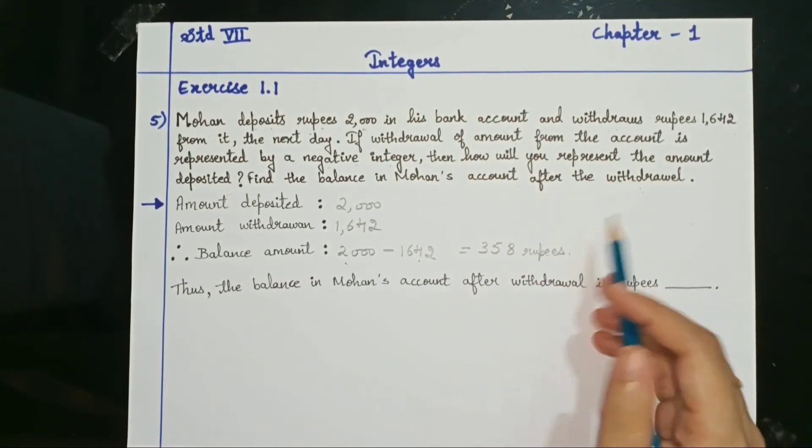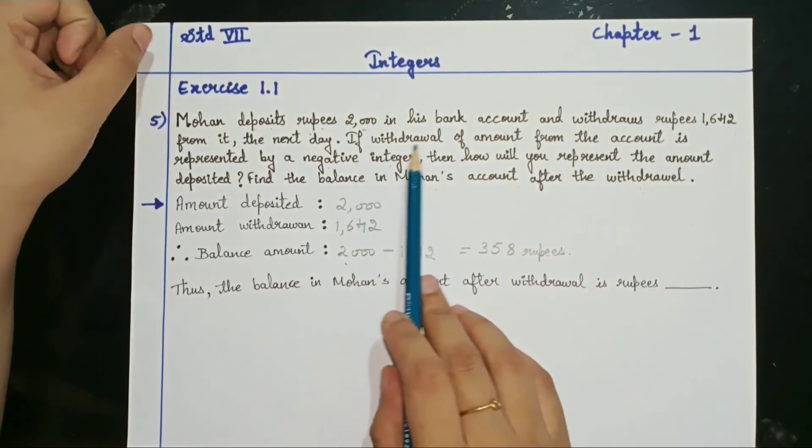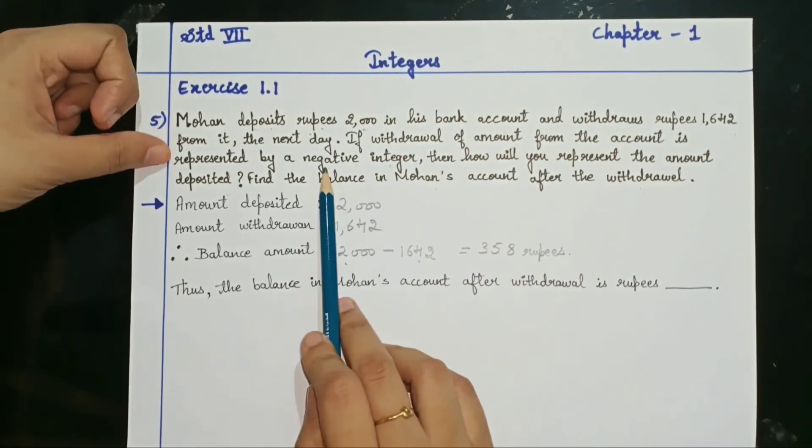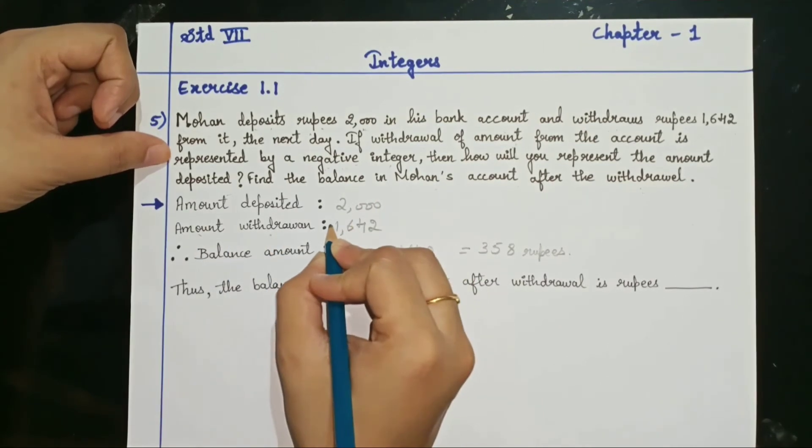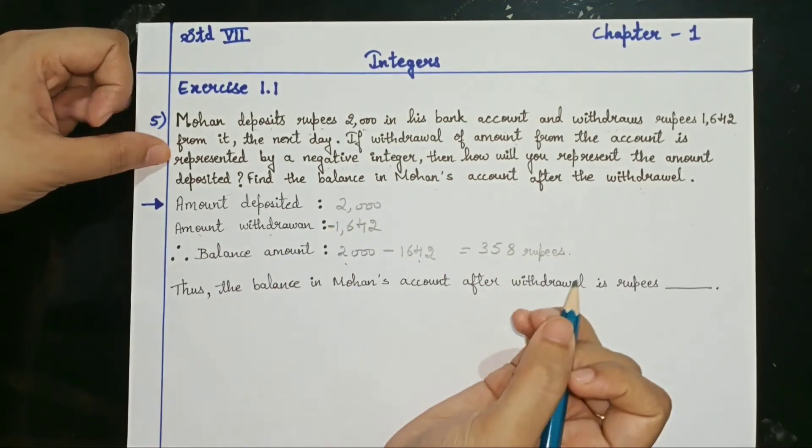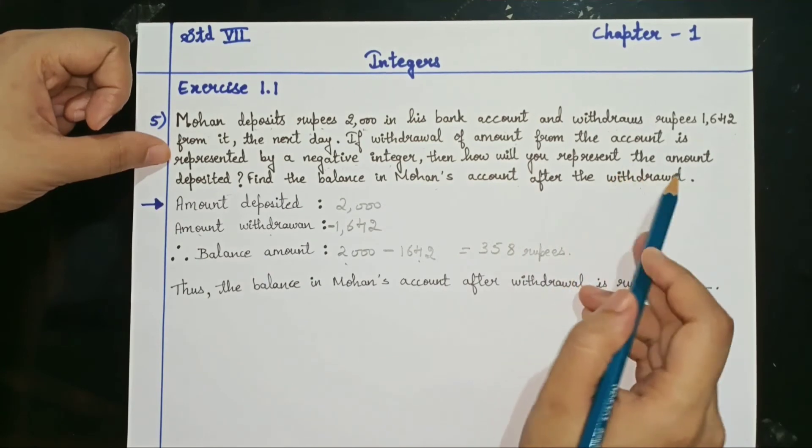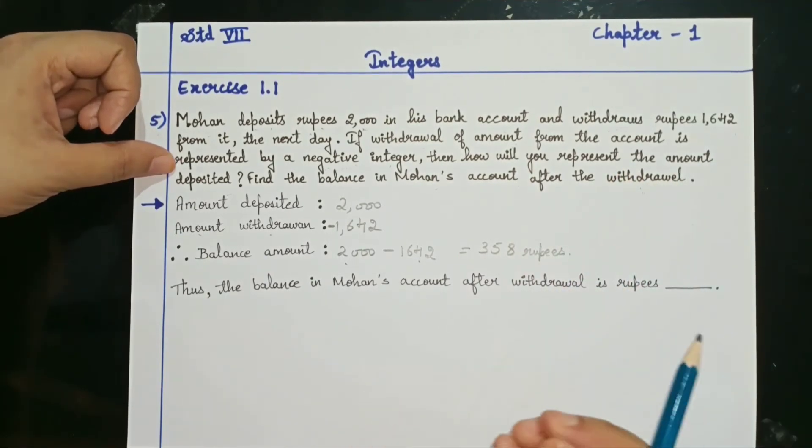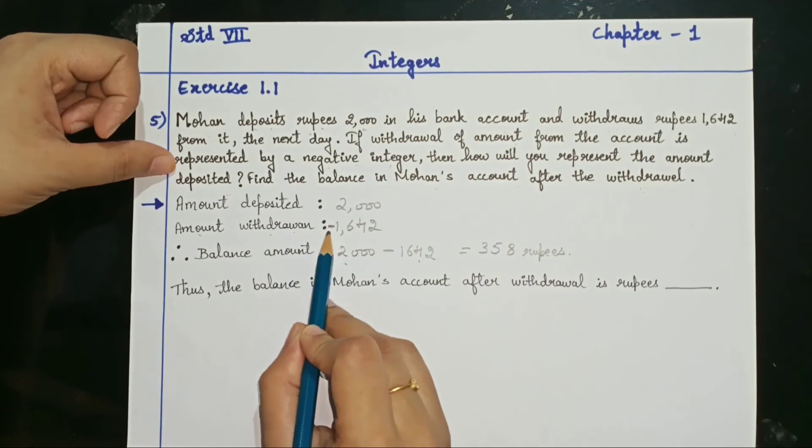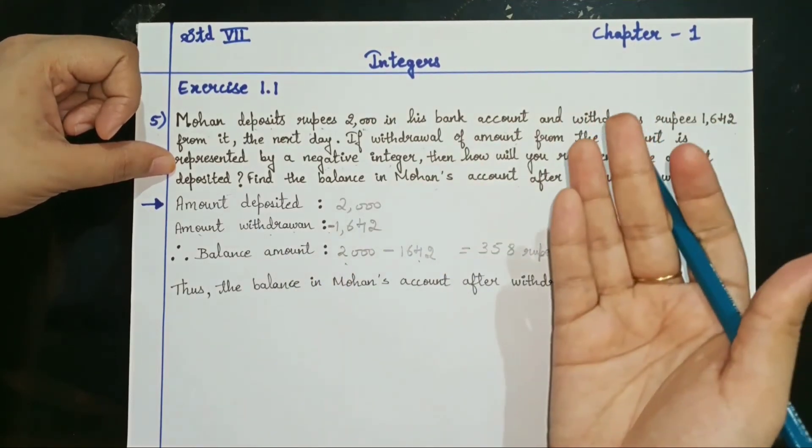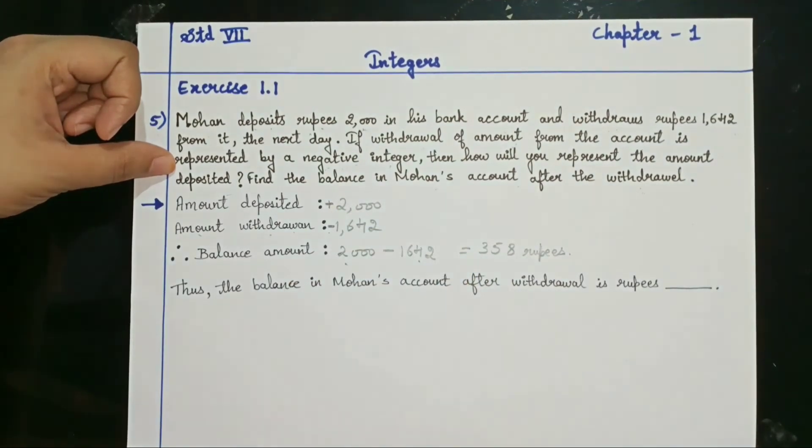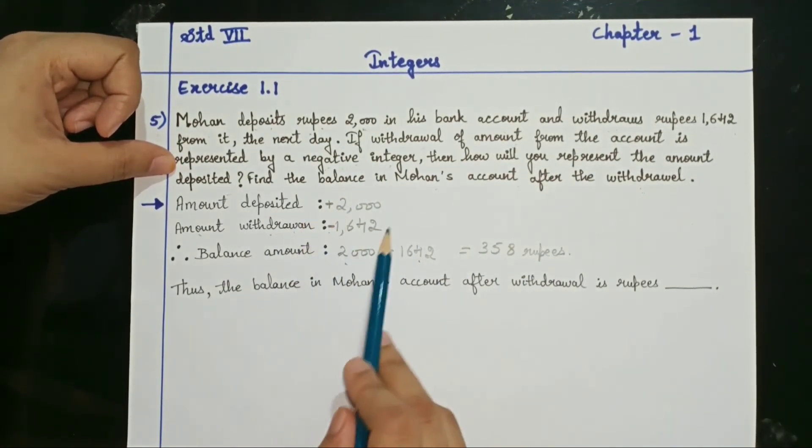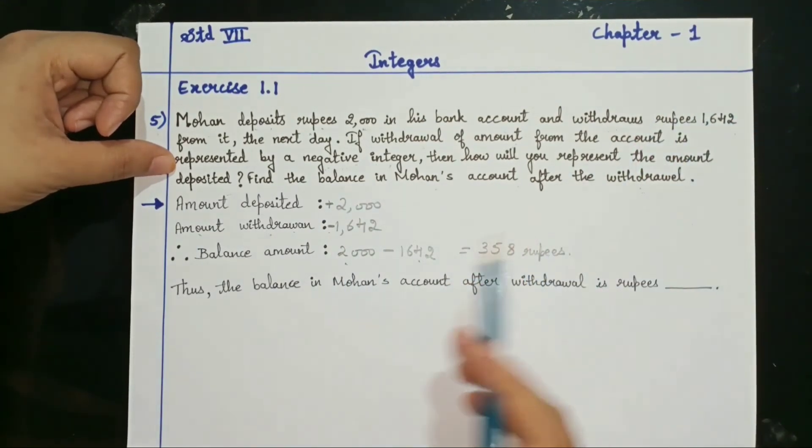Now one more thing they have asked here. If the withdrawal of the amount from the account is represented by a negative integer, amount withdrawn should be given a negative integer, then how will you represent the amount that is deposited? It's simple logic, for withdrawal it is minus, so obviously deposition will be positive. So it will have a positive sign.